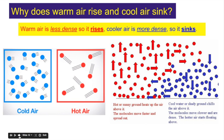Why does warm air rise and cool air sink? Warm air is less dense, so it rises. Cool air is more dense, so it sinks. Cold air has lots of particles close together with little movement. Hot air has fewer particles in the same given area, moving much faster. As the hot air rises, temperature decreases, and it starts to sink again. Cold air is more dense with particles closer together; warm air is less dense with particles further apart and more active.